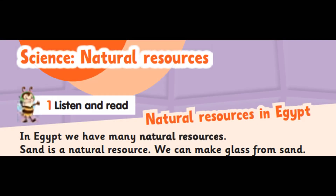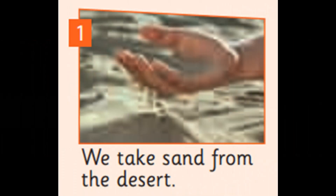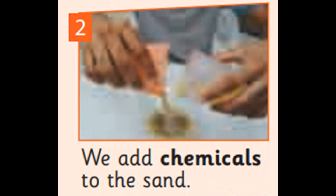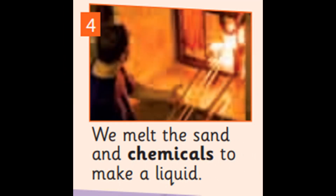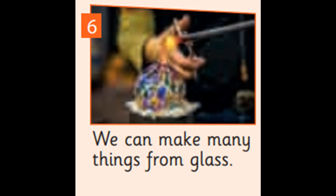Unit 4, page 68, Exercise 1. We can make glass from sand. 1. We take sand from the desert. 2. We add chemicals to the sand. 3. Then we put everything in a bowl. 4. We melt the sand and chemicals to make a liquid. 5. Then we shape the glass. 6. We can make many things from glass.